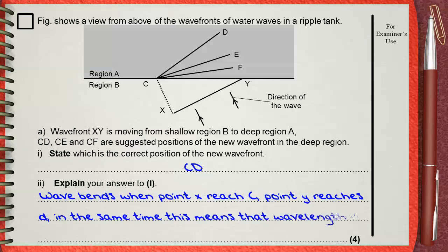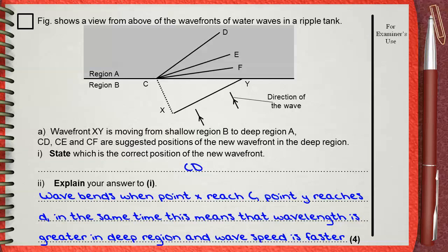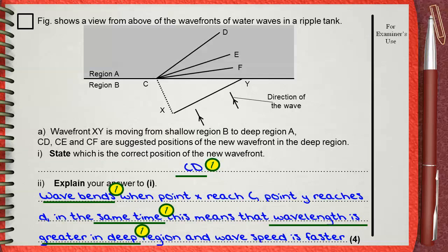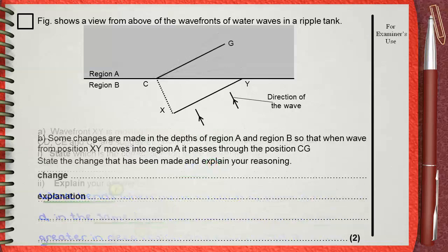The answer is CD. The wave bends when point X reaches C and point Y reaches D in the same time, meaning the wavelength is greater in the deep region and wave speed is faster. One mark for the correct answer CD, one mark for mentioning the wave will bend, one mark for stating that X reaches C and Y reaches D in the same time, and one mark for stating that wavelength increases or wave speed becomes faster in the deep region.